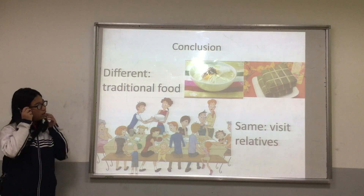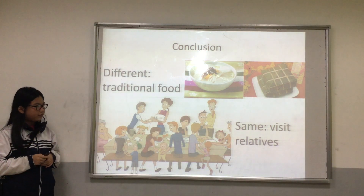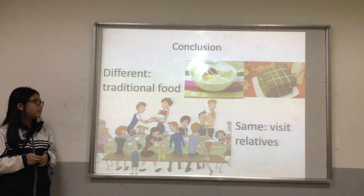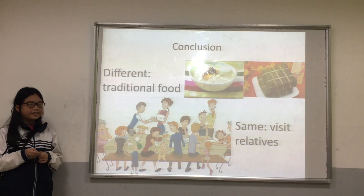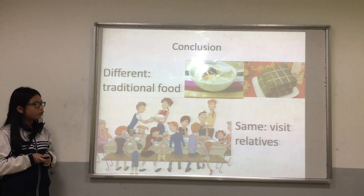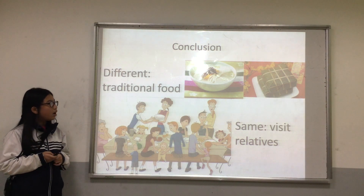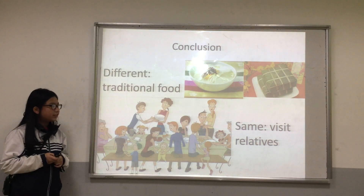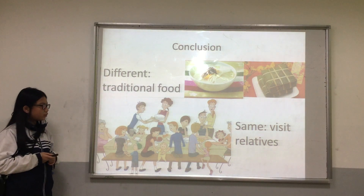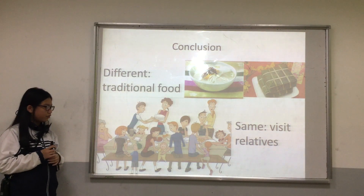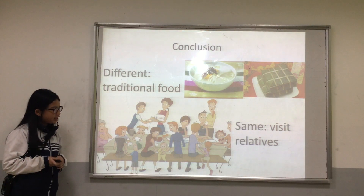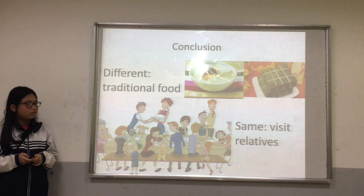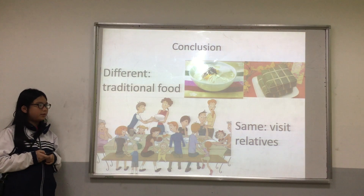However, South Korea is very different from my country. For example, the Korean traditional food is Tteokguk — it's a rice cake soup — but the Vietnamese traditional food is Bánh chưng. But there is one way the two countries are the same: on New Year's, both Korean and Vietnamese people visit relatives.